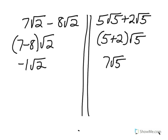In both cases, we have like radicals. In 7√2 - 8√2, we are combining like radicals by subtracting the coefficients 7 and 8. 7 - 8 is -1, then we write our √2, giving us -√2.